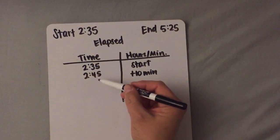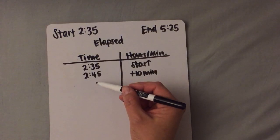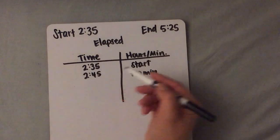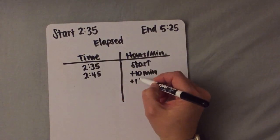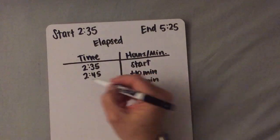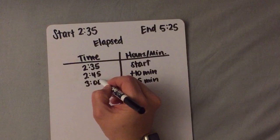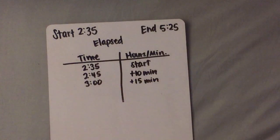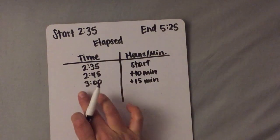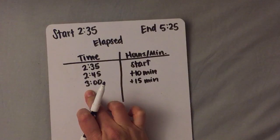Now I know that it only takes 15 minutes to get to the next hour, which is 3 o'clock. So I'm going to go ahead and add 15 minutes and make it 3 o'clock. It's a lot easier to work with hours instead of hours and minutes.